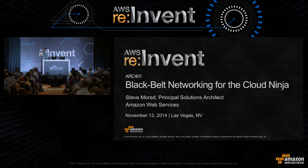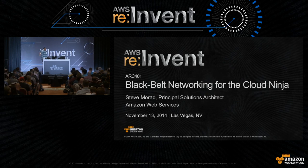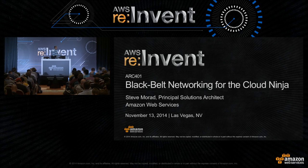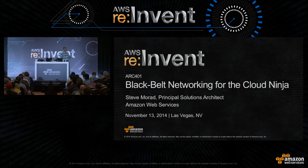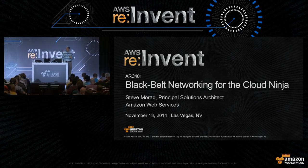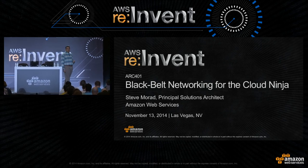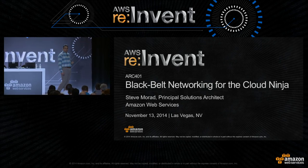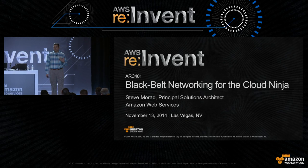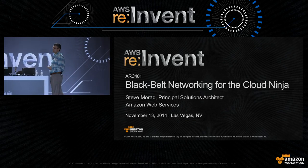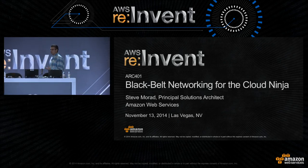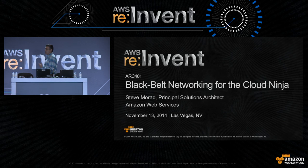Good morning, everybody. Welcome back to another day at re:Invent. I hope you enjoyed the keynote this morning. Welcome to Architecture 401, Black Belt Networking for the Cloud Ninja. My name is Steve Morad. I am a Principal Solutions Architect with AWS. I've been working with AWS for a little over three and a half years, and one of the things I like helping customers with is dealing with their network issues and challenges.